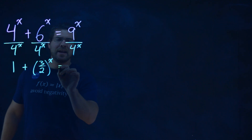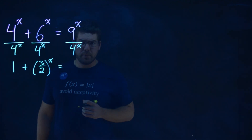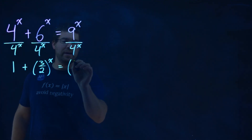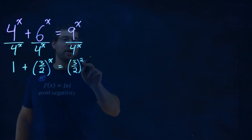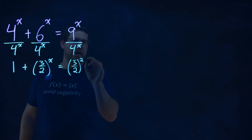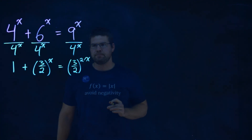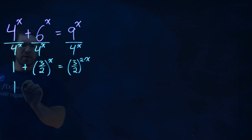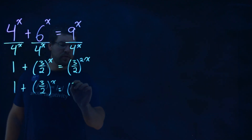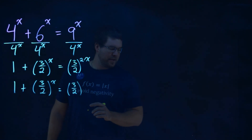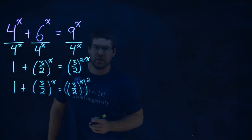From there, we have 9^x over 4^x. Here's the tricky part — this can actually be written as (3/2) squared, because 3 squared is 9 and 2 squared is 4, and then we multiply that exponent by x. So we can rewrite this as 1 plus (3/2)^x equals (3/2)^(2x).